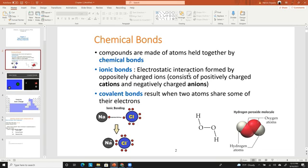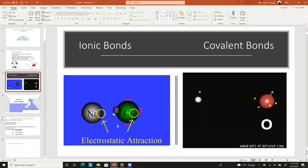Covalent bonds do not have positive and negative charges but they could have partial charges. The bond itself is created when two atoms share their valence electrons. Here are gifs of both of them showing the electrostatic interaction.